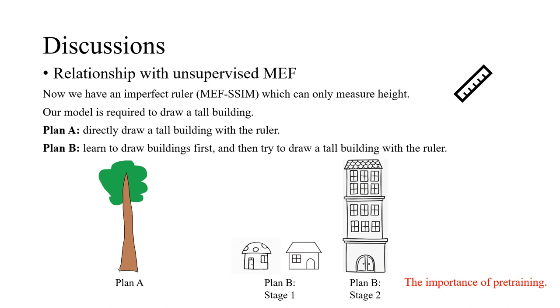Plan A is to directly draw a tall building with the ruler. Because our model has no idea about how to draw a building, it might draw a tall tree with the ruler. So we get plan B: learn to draw buildings first, and then try to draw a tall building with the ruler. That's exactly what our EMEF does.